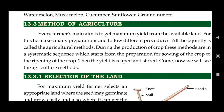During the production of crops, these methods are in a systematic sequence, which starts from the preparation for sowing of the crop to the ripening of the crops. From start to end, there are various processes that a farmer applies or follows — that is called agriculture method. At the last stage, the yield is reaped and stored.